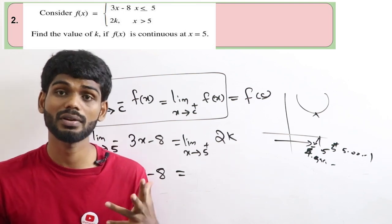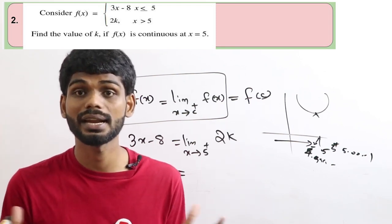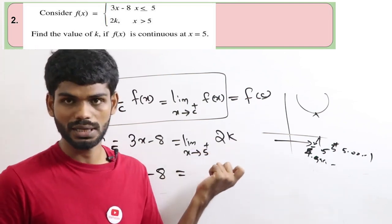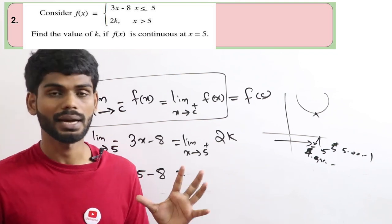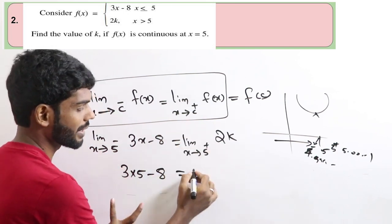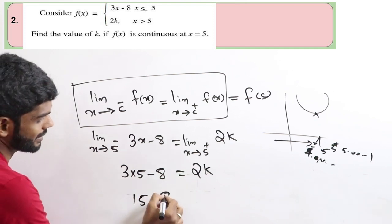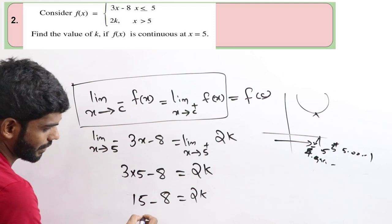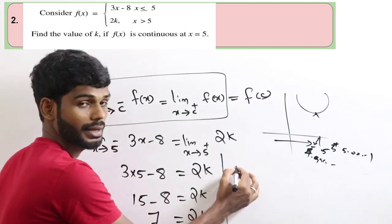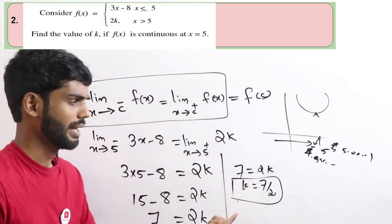We can apply substituting c equals 5. A constant function is always continuous at any real number. In this case, substituting x equals 5: 3 times 1 minus 8 equals 2k. So 1 minus 8 equals 2k, therefore 1 minus 8 equals 2k. Solving, k is equal to 7 by 2.